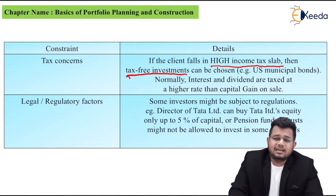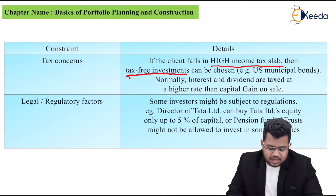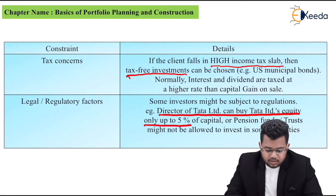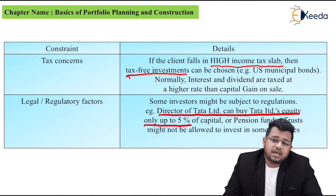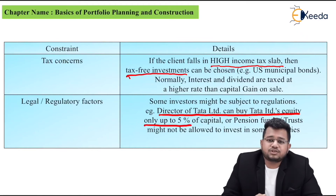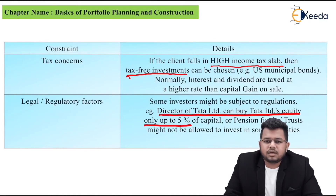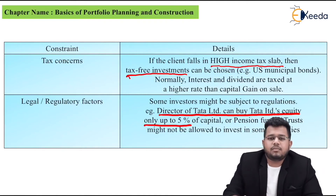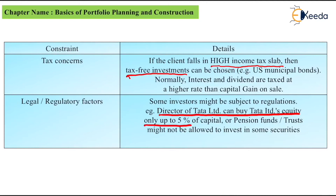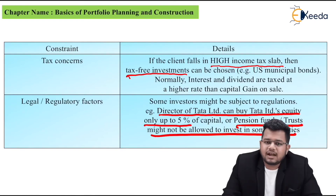Next are regulatory or legal factors. Some investors might be subject to regulations. For example, a director of Tata Limited can buy Tata Limited's equity only up to 5% of capital. If there is a restriction — say SEBI in India restricts that a promoter can own only 70% of equity — then out of 100 shares issued, the promoter can hold only 70, and the remaining 30 are available for public buying or selling. If any such restriction exists, write it in the IPS. Also, pension funds or trusts might not be allowed to invest in some securities, and any such local law must be taken into consideration.